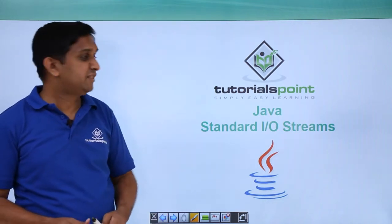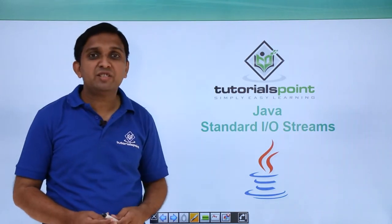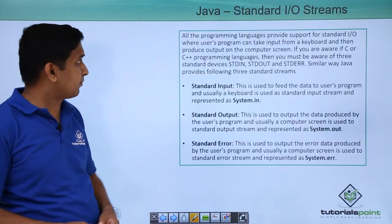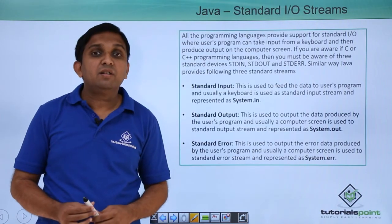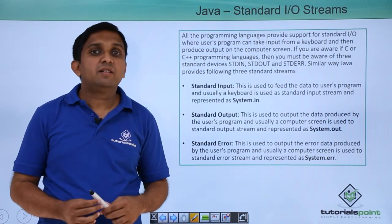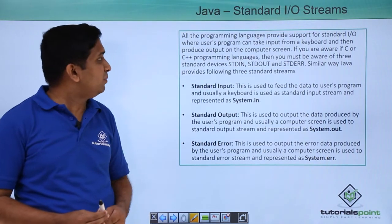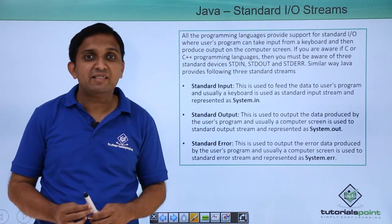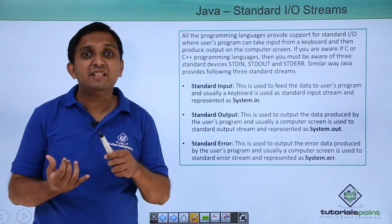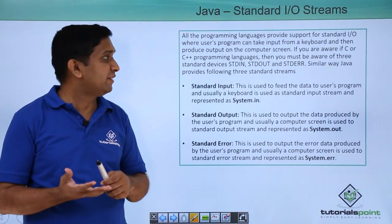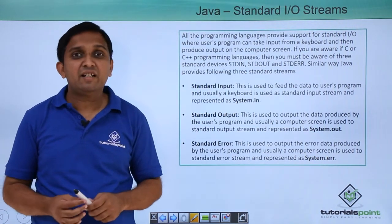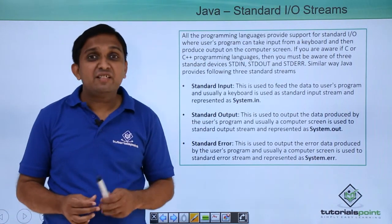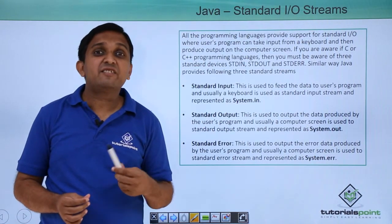Hello guys, we will see standard IO streams in Java. In C or C++ we have three standard devices: stdin, stdout, and stderr. In the same way, Java provides three standard streams.